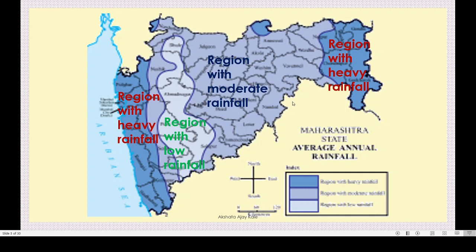Like this, our Maharashtra state is divided into three categories: region with heavy rainfall, region with moderate rainfall, and region with low rainfall. According to this, we cultivate different crops and fruits. There are also two types of crops: Kharif crops and Rabi crops, about which we studied in the first part.